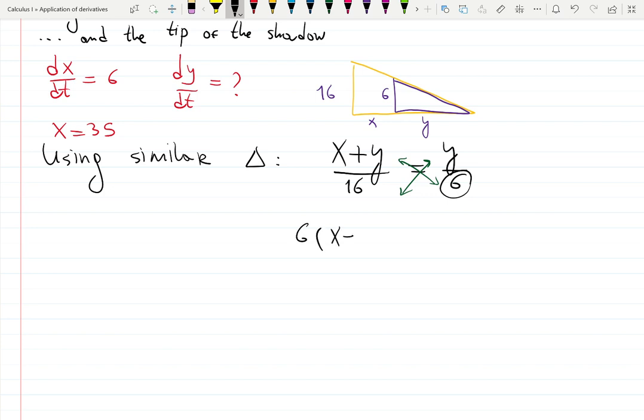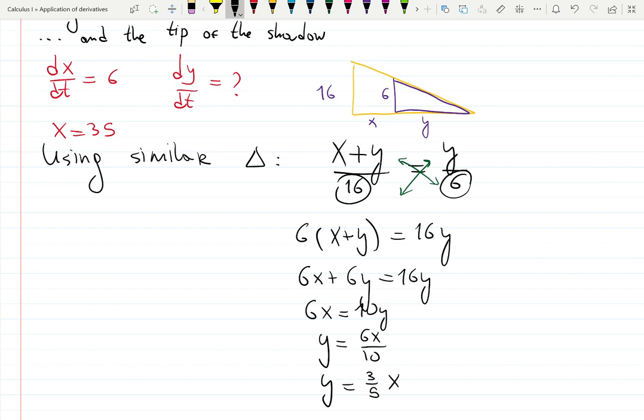So I'm multiplying by 6, it will give me 6x plus 6y, and I'm multiplying by 16, it will give me 16y. That's what it means to do cross product. Then I will distribute, 6x plus 6y equals 16y, and then I will collect, 6x equals 10y, and then y is 6x over 10. If you simplify, it's going to be 3/5 x. I divide it by 2. That's my y.